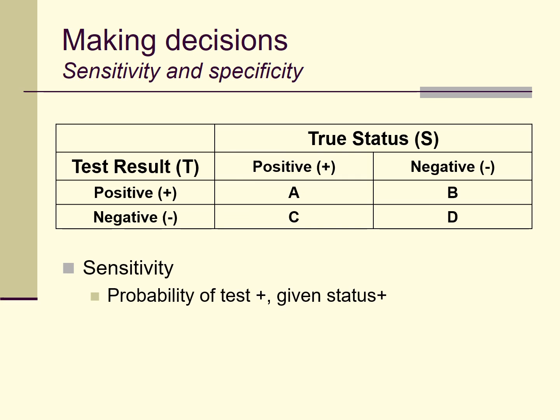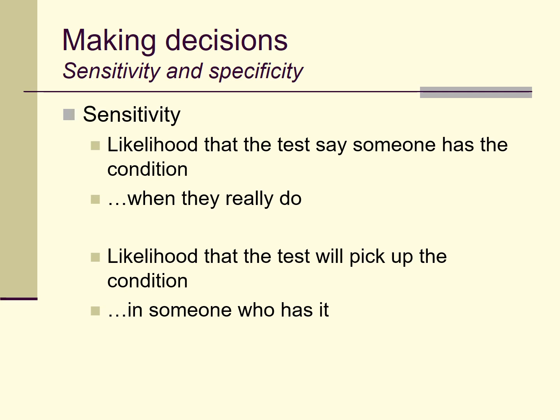You can then calculate sensitivity — the probability that the test result is positive given that the true status is positive. Expressed mathematically: probability(test positive | status positive) = A divided by (A + C). This is the proportion of truly depressed people for whom the test correctly says they are depressed. In slightly different language, sensitivity is the likelihood that a test says someone has a condition when they really do — the likelihood the test picks up the condition in someone who truly has it.